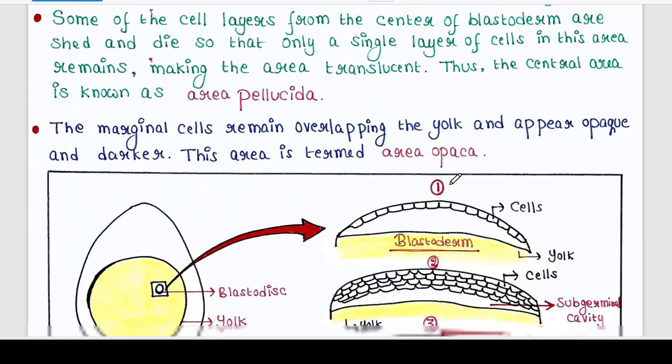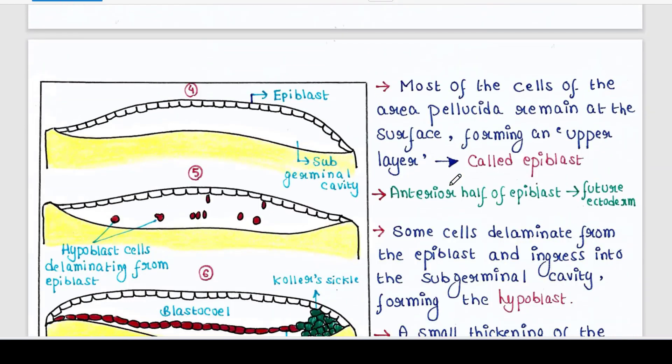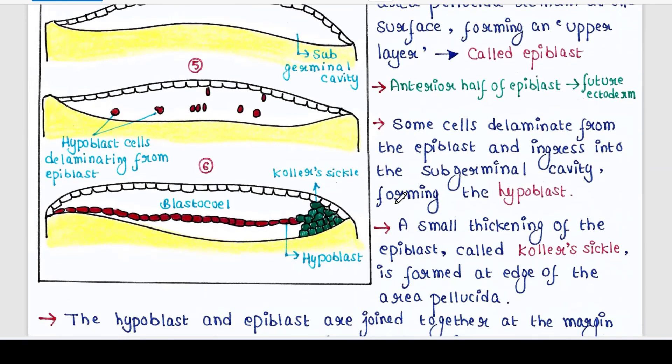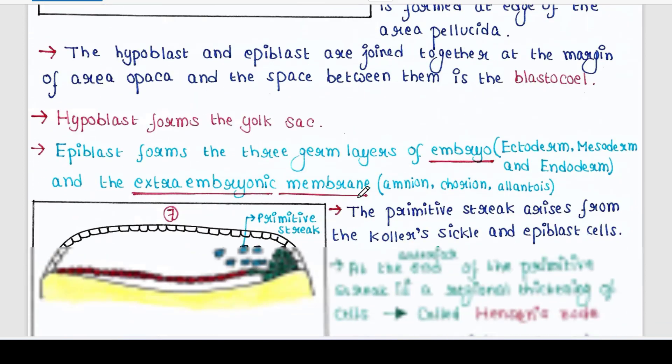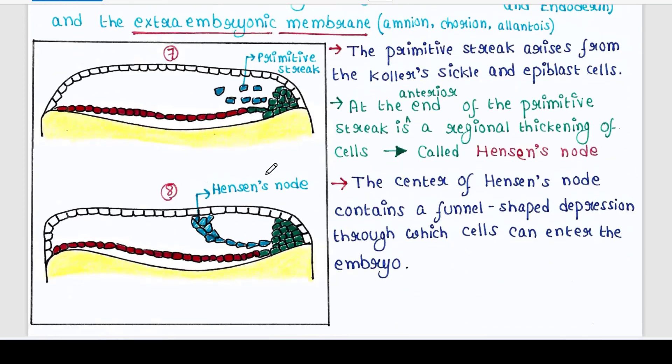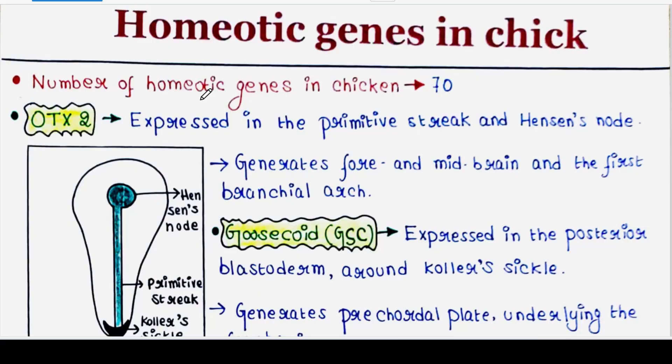There you can understand what is this primitive streak, what is Koller's sickle, and what is Hensen's node. So I highly recommend you to go through that lecture if you want to fully understand today's lecture. The links are there in my description box. Let's start today's lecture.